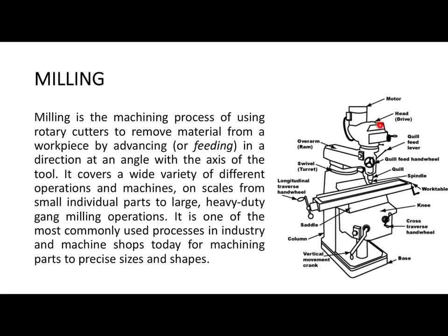On the top you can see the motor, the head drive, the overarm, the quill feed lever, the quill feed hand wheel, and the quill. The spindle is the rotating object in the milling machine. The workpiece is stationary and is placed on the work table. There is a swivel, a longitudinal traverse hand wheel to move the work table forward and backward, a cross traverse to move it left and right, and a vertical crank to move it up and down. This is a three-axis machine. There is also another part called the knee, located below the machine and the base.